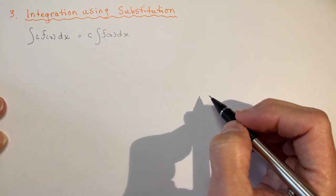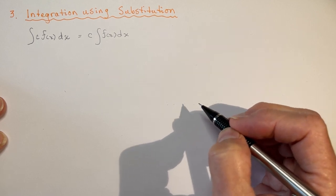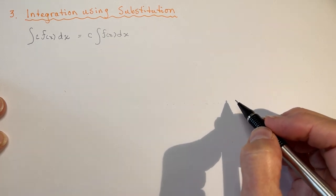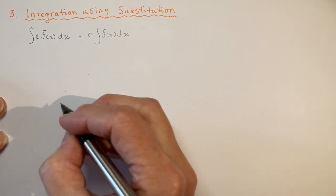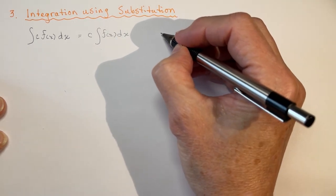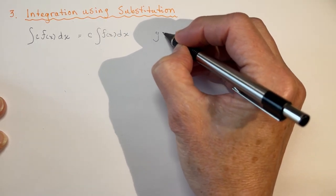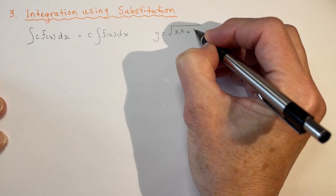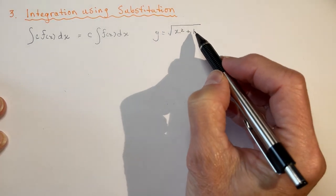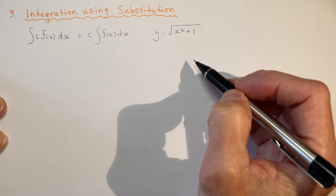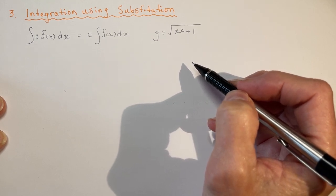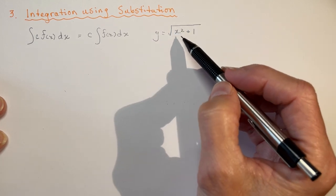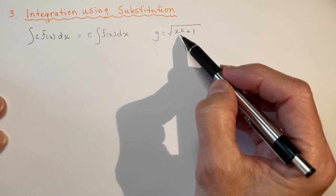We're going to start by defining the substitution rule which is basically a reverse chain rule. So let's start by visiting what the chain rule was. So if I had something like this, this is a function within a function. Remember composite functions that you did in grade 12 advanced functions. So you would say the function is the root of x and the composite part of it or the g of x would be x squared plus 1.